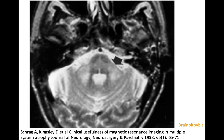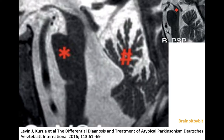So if you see it, you can suggest multi-system atrophy. But if it's not visible, the absence of a hot cross bun sign does not exclude multi-system atrophy.